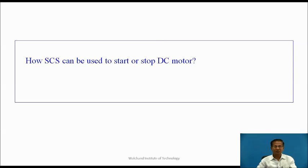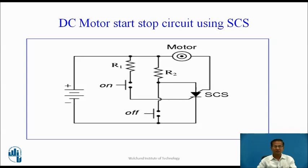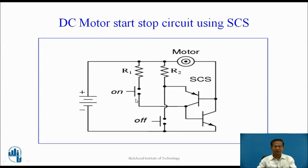How can SCS be used to start or stop a DC motor? This is the circuit diagram to start and stop the DC motor. The upper switch is used to turn off SCS and the lower switch is used to turn on SCS. When the ON switch is closed, current flows through the input voltage source and R1 through the ON switch; this current acts as a trigger current, causing SCS to turn on. Once SCS turns on, the motor rotates and load current flows through the source, motor, and SCS. To turn off the motor, close the OFF switch; this diverts the motor current, causing SCS to turn off and the motor to stop.